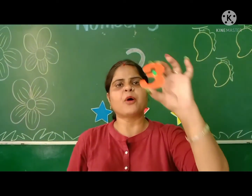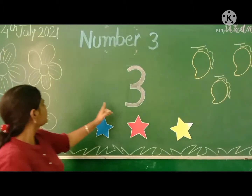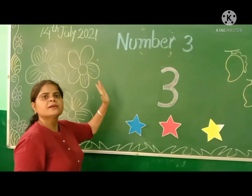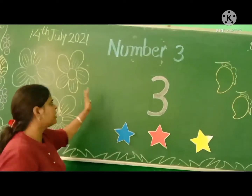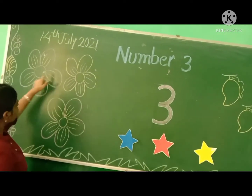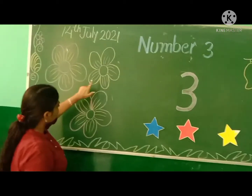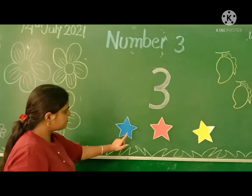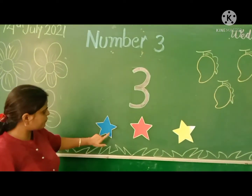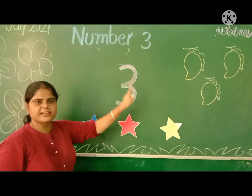Today we are learning about number 3. See here on the green board some pictures. Let's count with me one by one. Flowers — count with me: 1, 2, 3. These are 3 flowers. Stars — count with me: 1, 2, 3. These are 3 stars.